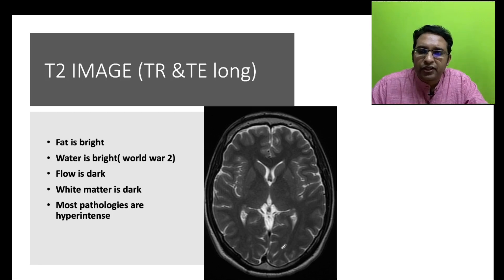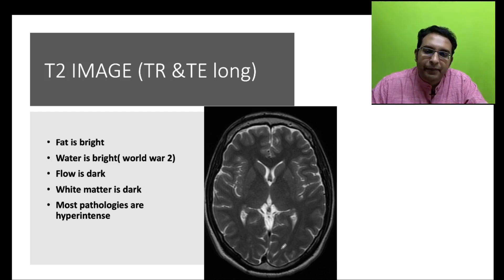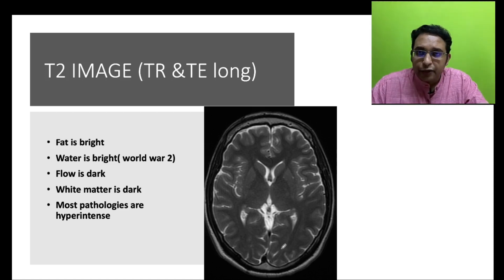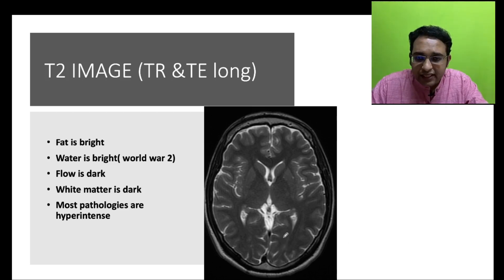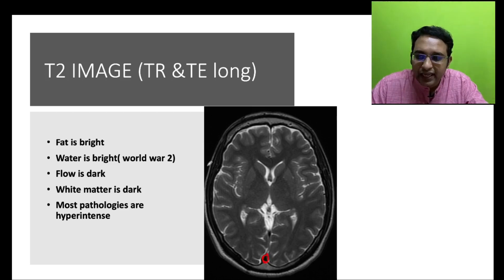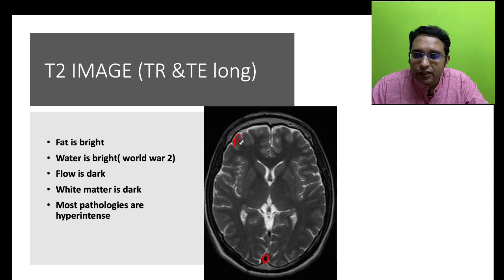T2 is just the opposite — TR is long and TE is long. Fat is less bright, but water, which was dark in T1, is now bright. A helpful mnemonic is 'World War 2' — water is white in T2. One more point: flow is dark in T2. Flowing blood through vessels will appear darker — that is why a sinus appears dark in T2. Grey matter is hyperintense and white matter is darker, which is the opposite of T1.